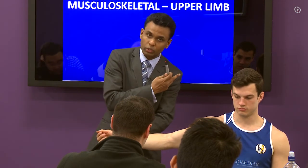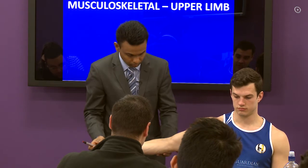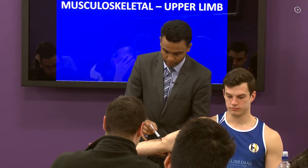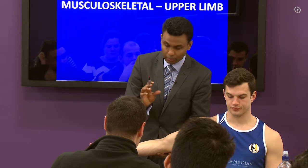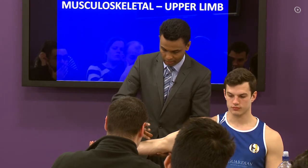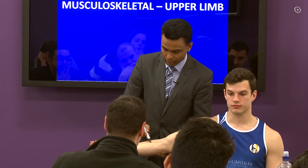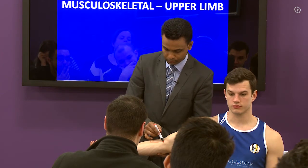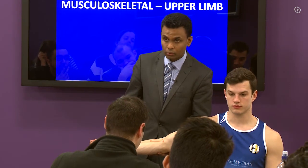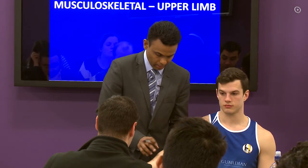Your medial cutaneous nerve of the forearm comes directly from the brachial plexus. The lateral cutaneous nerve of the forearm is a continuation of the musculocutaneous nerve. Now, coming down to get our median nerve and ulnar nerve covered in the forearm, we'll cover the cubital fossa — quite an important question in the exam.